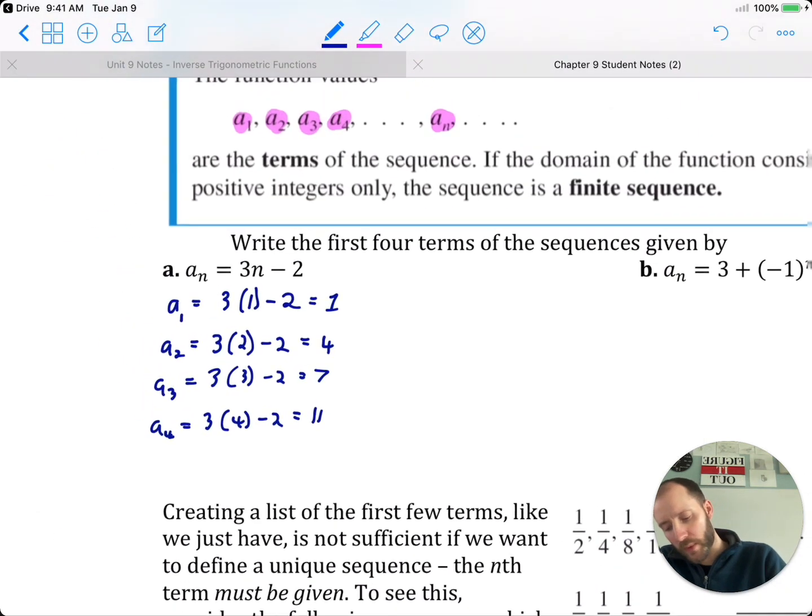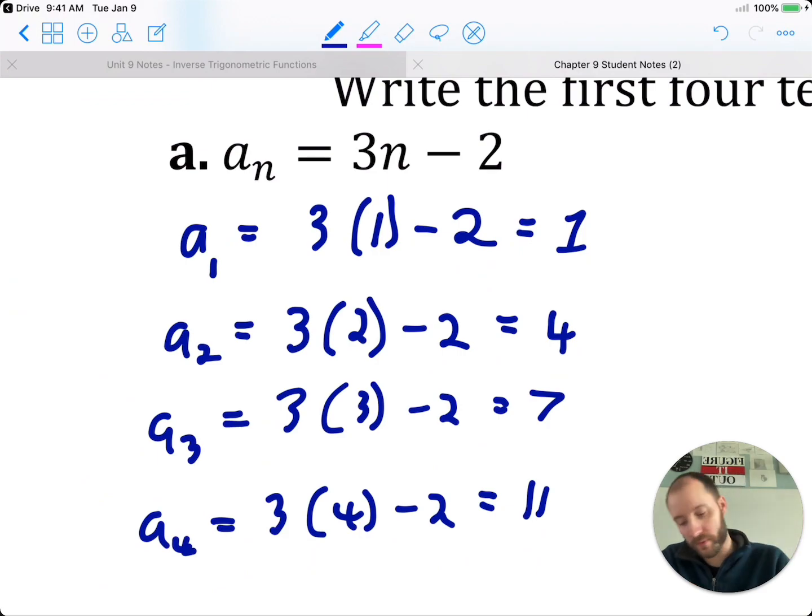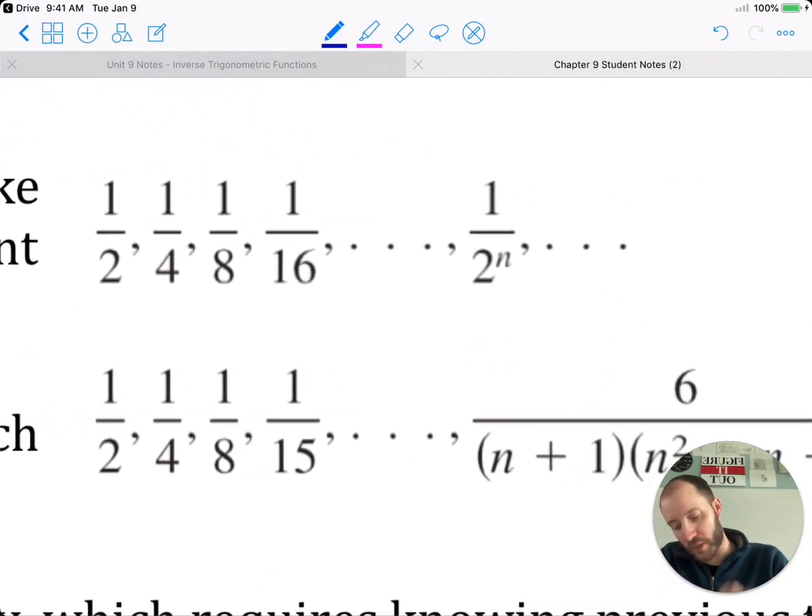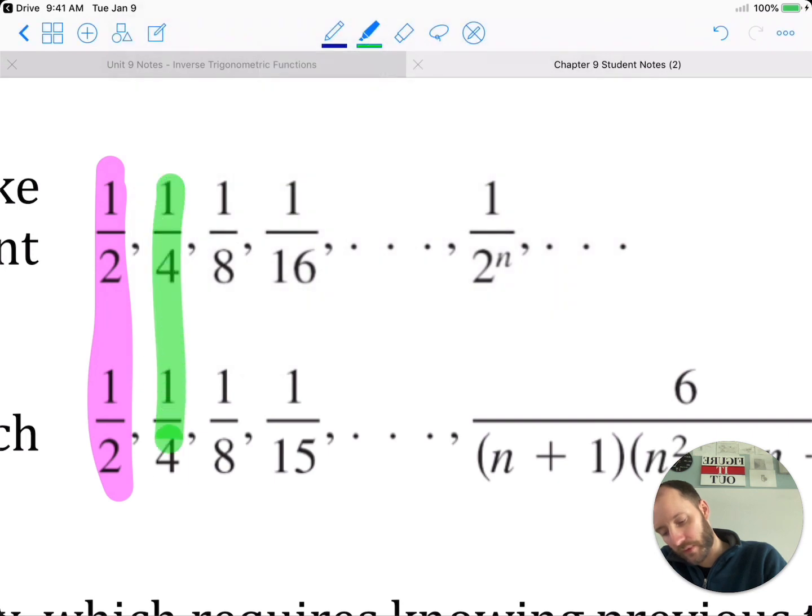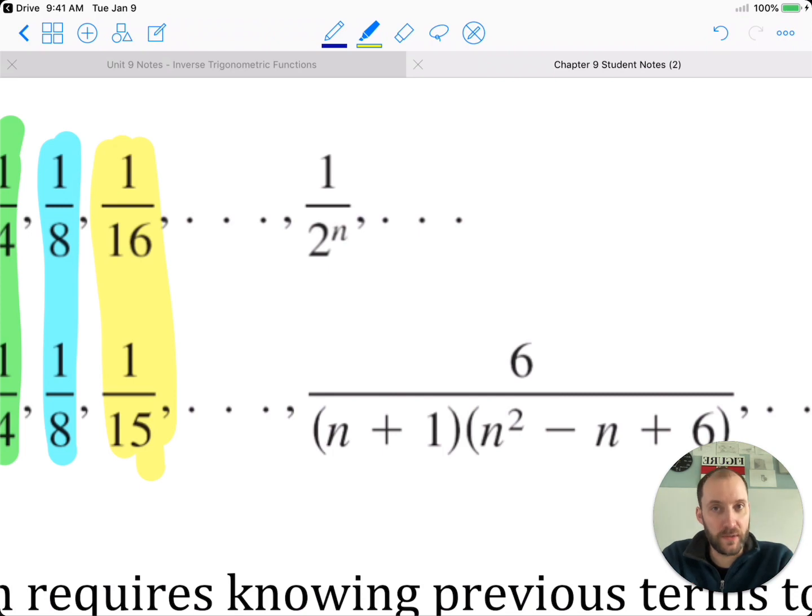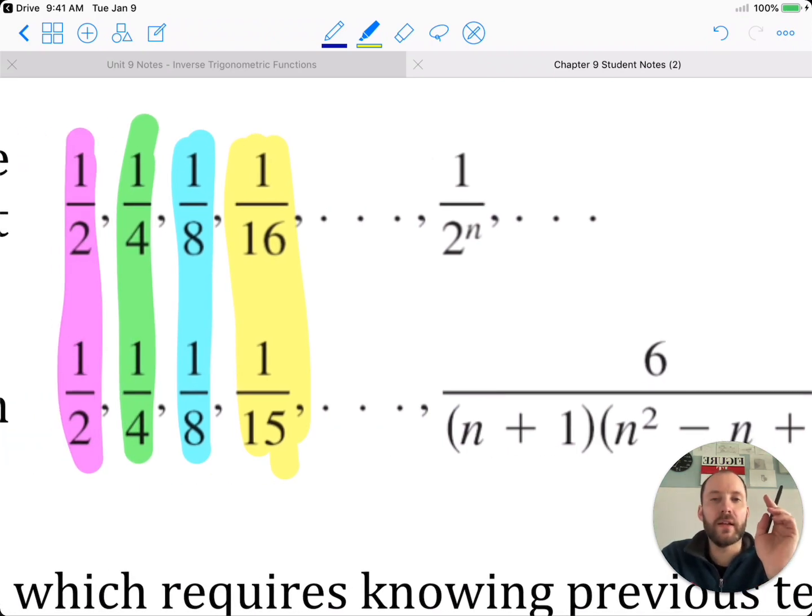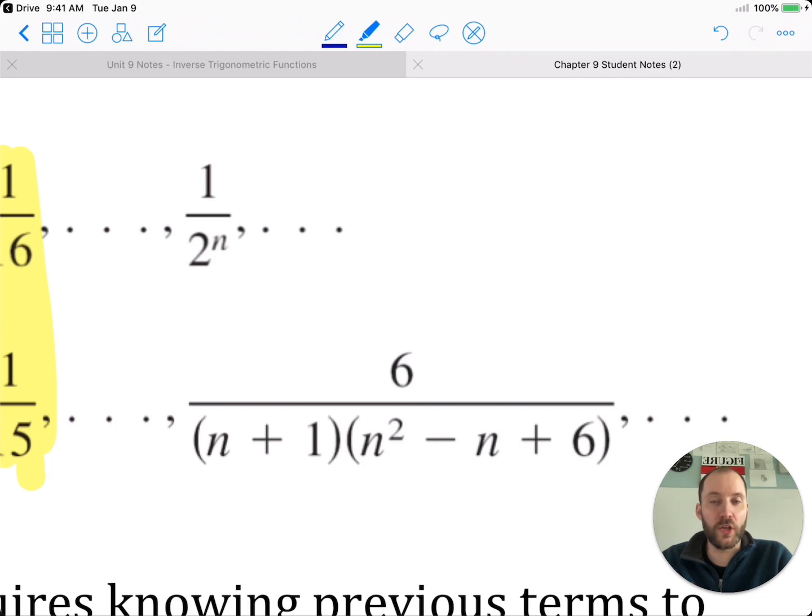Now here's the thing. We were given a formula, 3n minus 2. If we're only given the first couple terms, this is not enough to say two sequences are the same. For example, we have 1 half as the first term, 1 fourth as the second term, 1 eighth as the third term. They're all the same, you may think they're the same sequence. By the fourth term, you see the terms are a little different, and the formulas for the sequences are very different. You can't make assumptions based off of a handful of terms. You have to look at the sequence as a whole, and the formula for the sequence is the best way to make that kind of call.